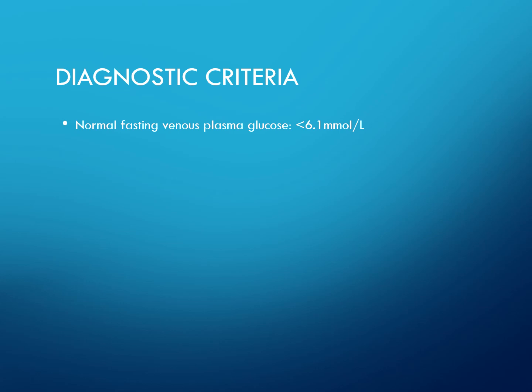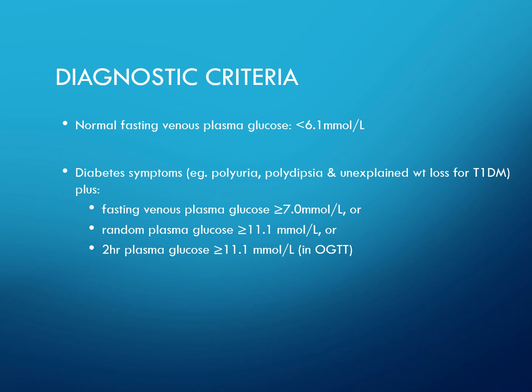The diagnostic criteria state that normal fasting venous plasma glucose should be less than 6.1 millimolar per litre. Symptoms such as polyuria, polydipsia, and unexplained weight loss, plus a fasting venous plasma glucose greater than or equal to 7.0, a random plasma glucose greater than or equal to 11.1, or a 2-hour plasma glucose greater than or equal to 11.1 on the oral glucose tolerance test, are diagnostic.